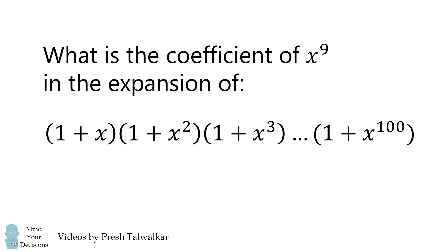The first term is 1 plus x multiplied by 1 plus x squared multiplied by 1 plus x cubed all the way until the last term of 1 plus x to the power of 100.